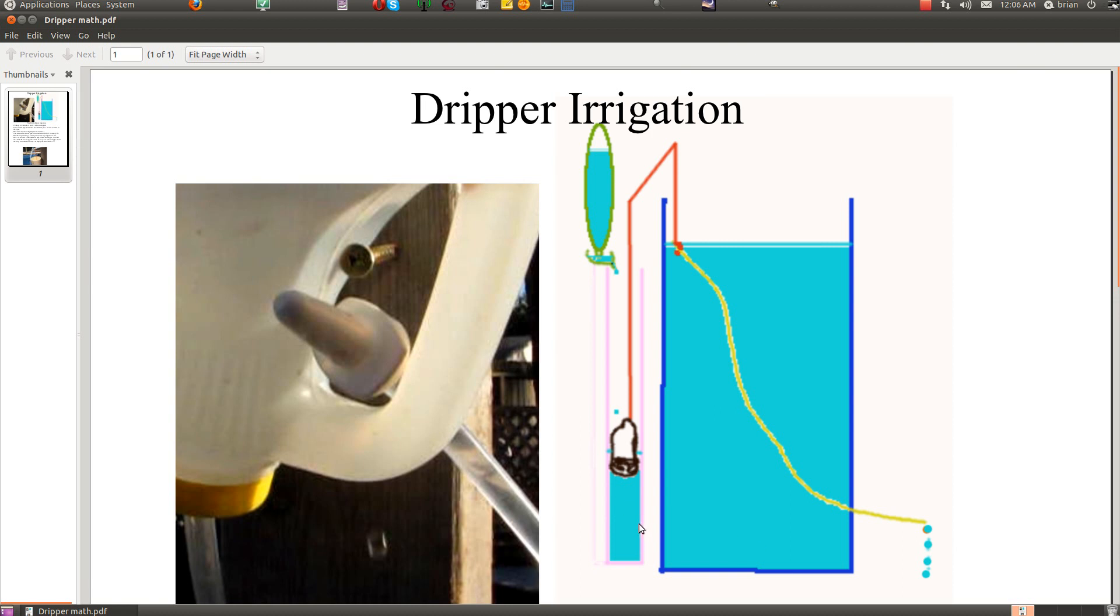In my case it's a 3 inch, which is 7.5 centimeter diameter water pipe, and this is a blue barrel which is almost 200 liters capacity.